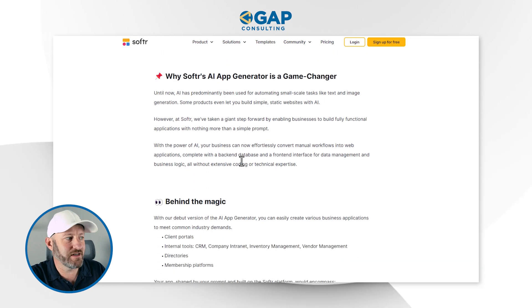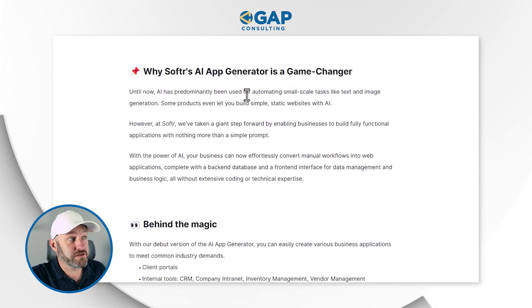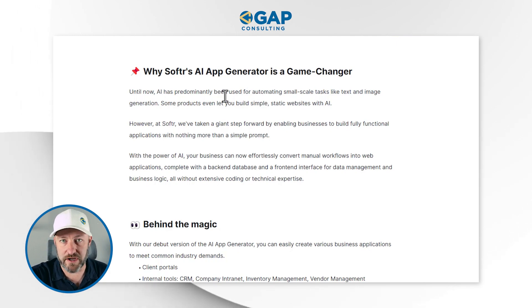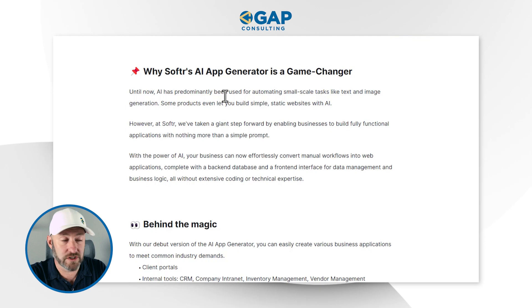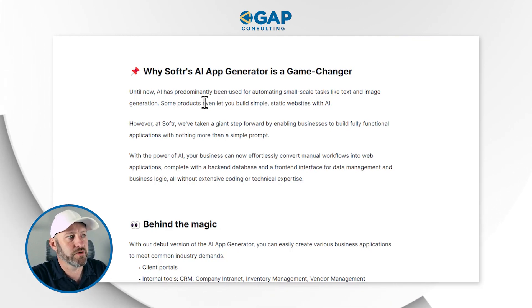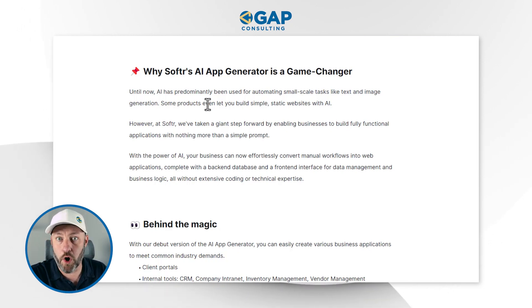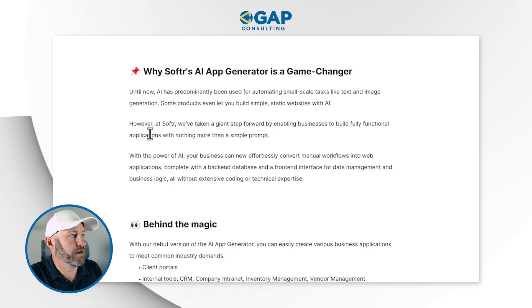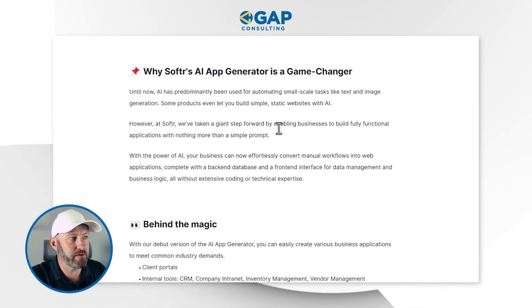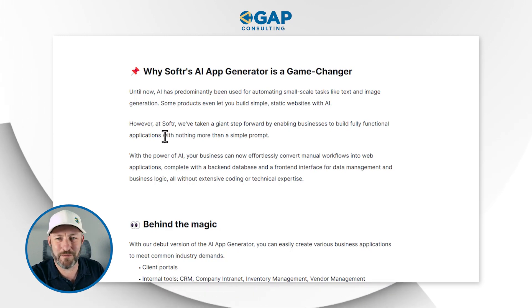This particular blog is called 'The Next Leap in No Code App Creation: Introducing Softr's AI App Generator.' As Softr says, AI has predominantly been used for automating small scale tasks like text and image generation. Some products will let you build simple static websites with AI — I've experimented with some of these but haven't found any to be overwhelming. But Softr is saying they've taken a giant step forward by enabling businesses to build fully functional applications with nothing but a simple prompt.